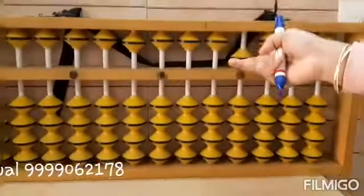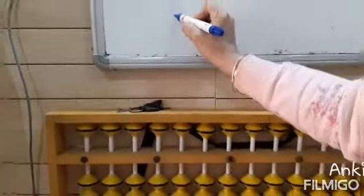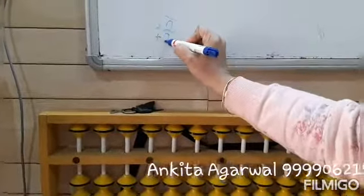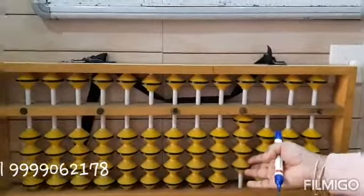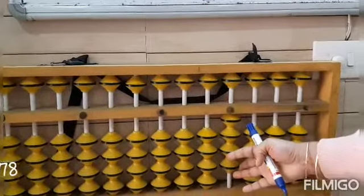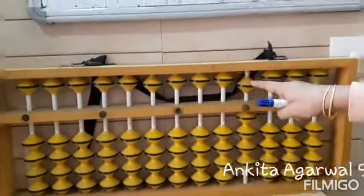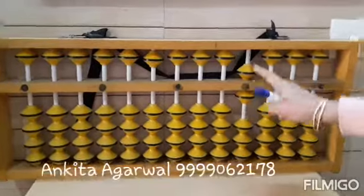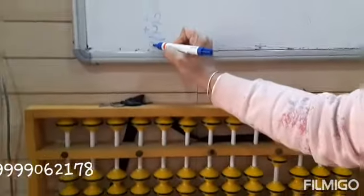Now let's take another example. Suppose I want to add 2 plus 2 and then again plus 2. So 2 plus 2 gives 4. Now I want to add 2 again but there is no room. So I will add 5 and subtract 3: 1, 2, 3. The answer is 6. So 2 plus 2 plus 2 is 6.